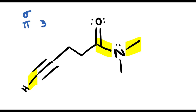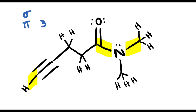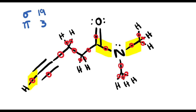When we're trying to figure out the number of sigma bonds, we must first show all of the hydrogen atoms. Then we can go ahead and count the total number of sigma bonds: 1, 2, 3, 4, 5, 6, 7, 8, 9, 10, 11, 12, 13, 14, 15, 16, 17, 18, 19. So there's a total of 19 sigma bonds in this molecule.